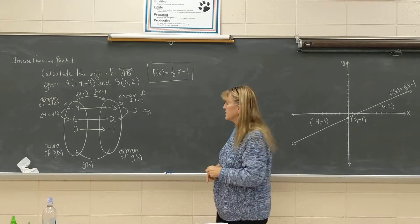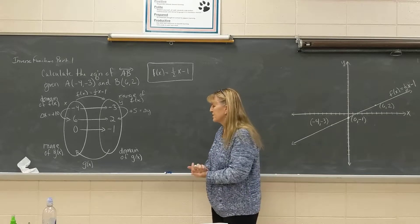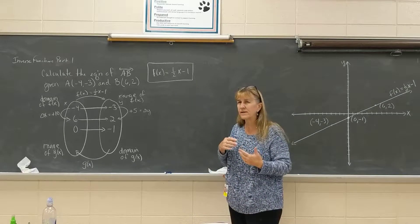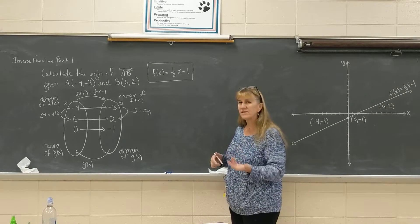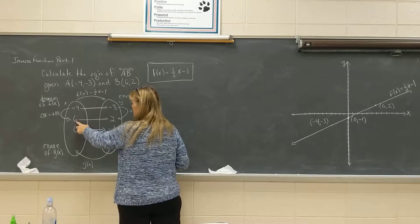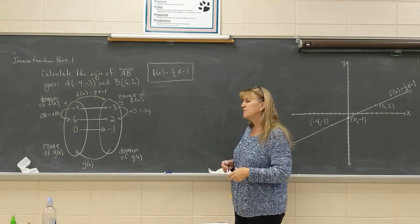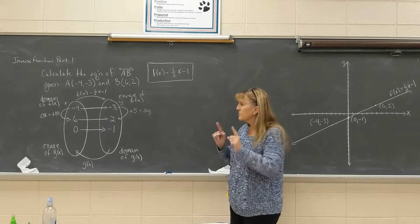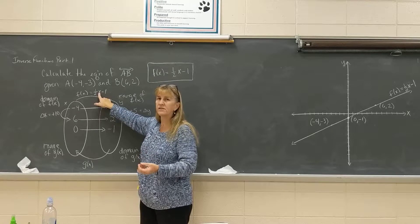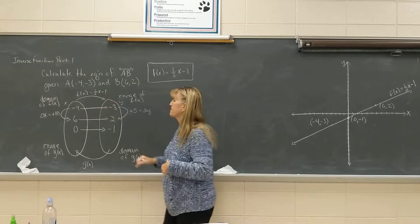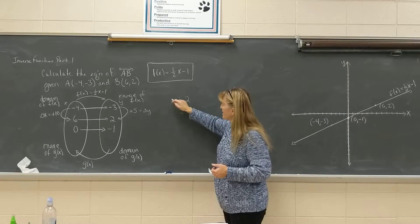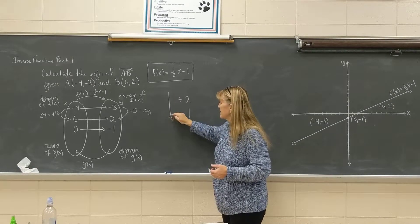I want to create an inverse function — let's see if we can come up with a function that's going to undo f. We can do this with common sense or algebraically, and I'll show you both ways. If I put a number in for x, like the 6 we checked, the first thing I did was take half of 6. So the first thing I did when I put that 6 in was divide it by 2, giving 3. Then we subtracted 1. So: divide by 2, then subtract 1. This is the rule for f.